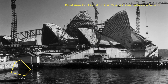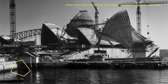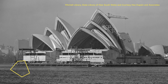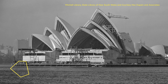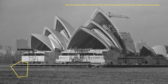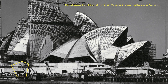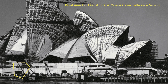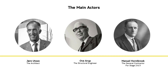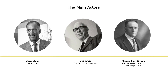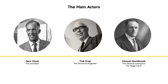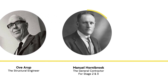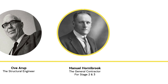Designed by Danish architect Jørn Utzon and engineered by British firm Ove Arup, the Sydney Opera House is a 20th century architectural masterpiece. Part of its significance relies on the revolutionary construction process. Despite this, the contribution of the Australian construction company Hornibrook is often forgotten.